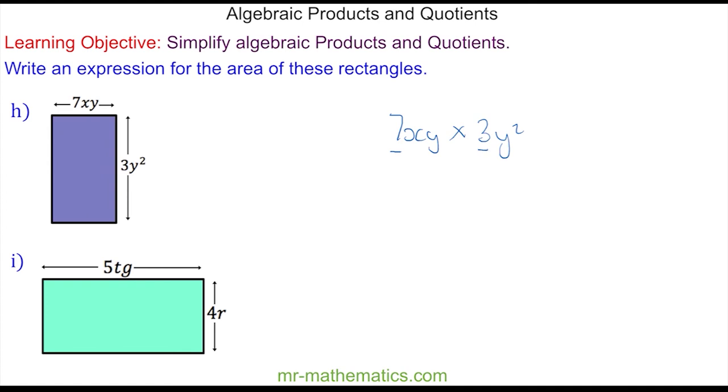We have the 7 times the 3, which is 21. We have an x term. And the y multiplied by y squared, which is y times y. And you can see we have y to the power of 3.